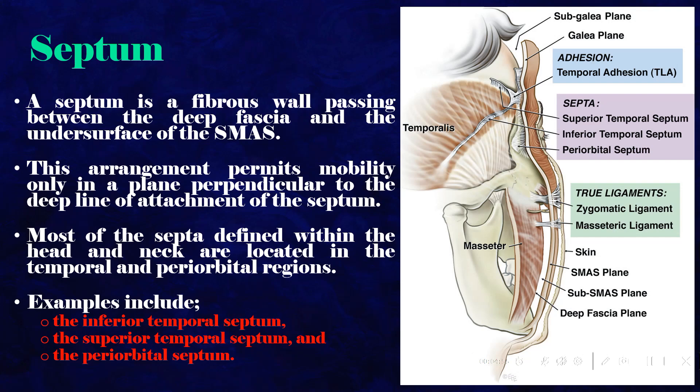A septum is a fibrous wall passing between the deep fascia and the undersurface of the SMAS. This arrangement permits mobility only in a plane perpendicular to the deep line of attachment of the septum. Most of the septa defined within the head and neck are located in the temporal and periorbital regions. Examples include the inferior temporal septum, the superior temporal septum, and the periorbital septum.